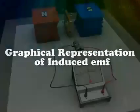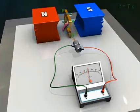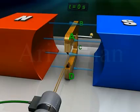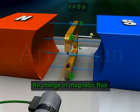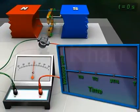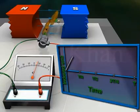Graphical representation of induced EMF: suppose the armature takes T seconds to complete one rotation clockwise. At time T equal to 0 seconds, the armature ABCD is vertical with arm AB up and arm CD down. At this position, the rate of change of magnetic flux is momentarily zero, hence the induced EMF is zero.